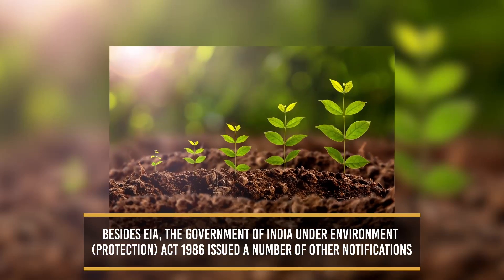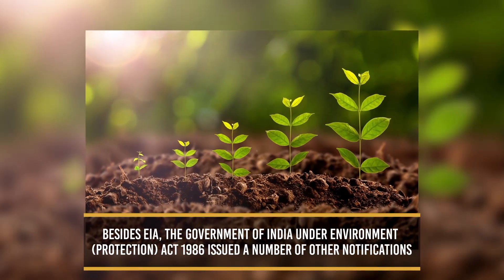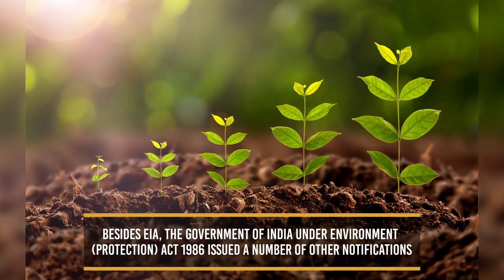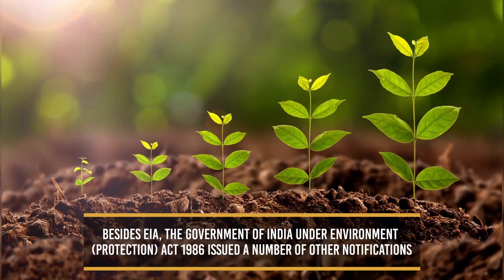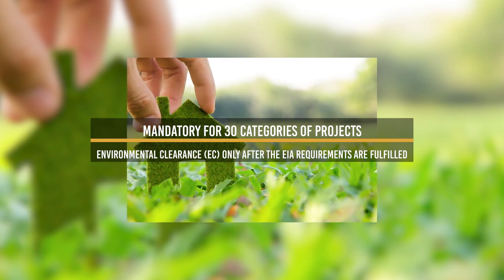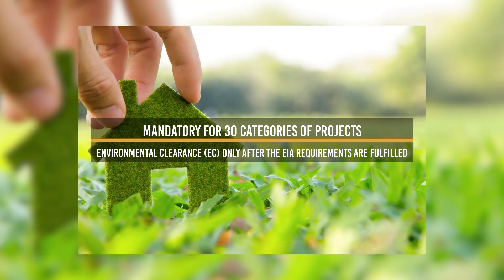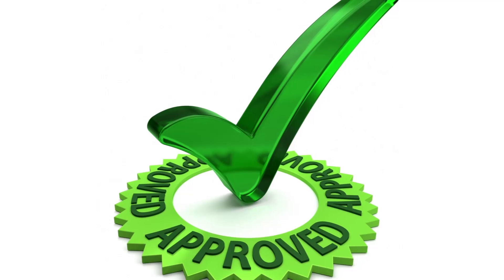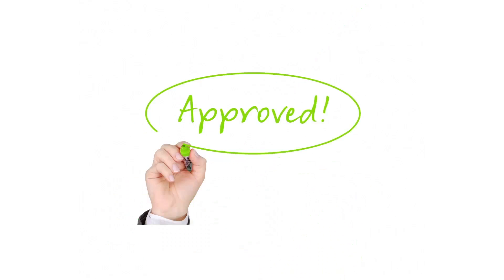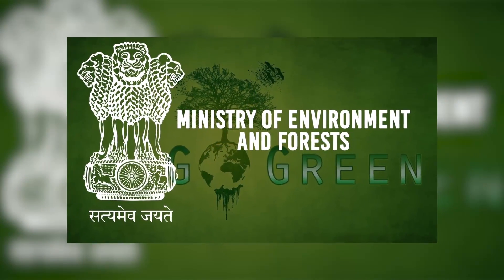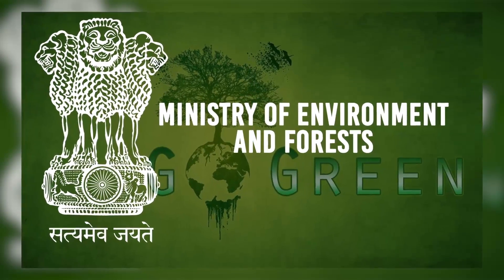Besides EIA, the Government of India under the Environment Protection Act 1986 issued a number of other notifications related to environmental impact assessments. EIA is now mandatory for 30 categories of projects, and these projects get environmental clearance, also known as EC, only after EIA requirements are fulfilled. Environmental clearance is granted by the Impact Assessment Agency in the Ministry of Environment and Forest, Government of India.